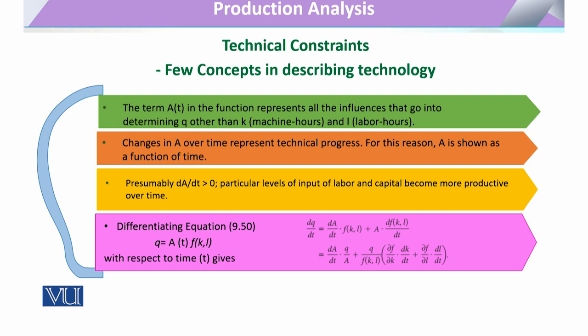We can further subdivide total growth or technical progress into various components, which helps us mathematically solve problems. We assume a production function where Q is a function of A(T), capital K, and labor L. Here, A is only a function of time and represents all the influences on output beyond capital and labor. All changes in technology over time are expressed as a function of time, and the change in technology over time is assumed to always be a positive increment.